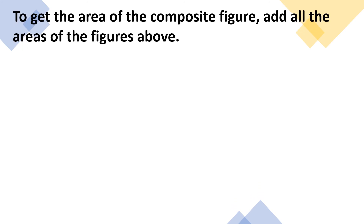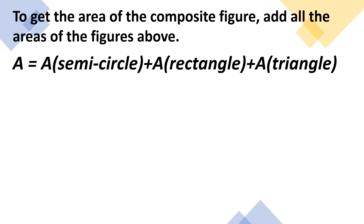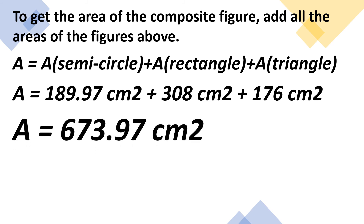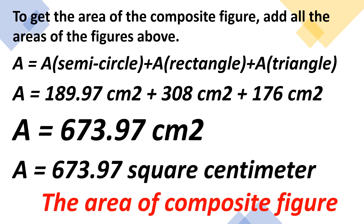To get the area of the composite figure, add all the areas of the figures. Area equals area of semicircle plus area of rectangle plus area of triangle. That is 189.97 square centimeters plus 308 square centimeters plus 176 square centimeters, which equals 673.97 square centimeters. So 673.97 square centimeters is the area of our composite figure.